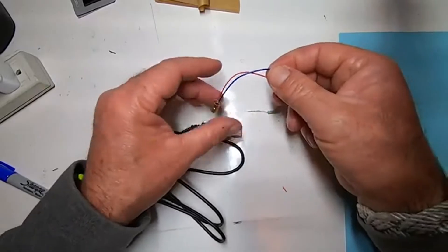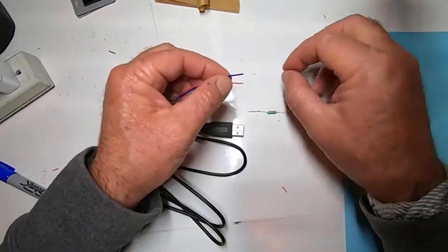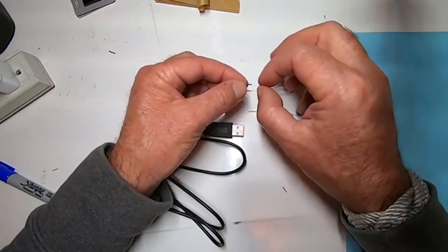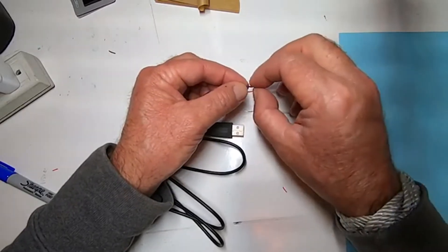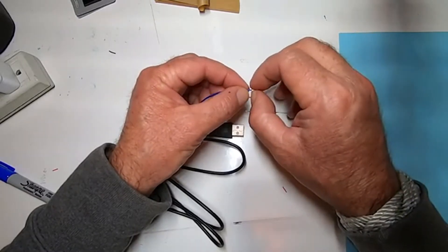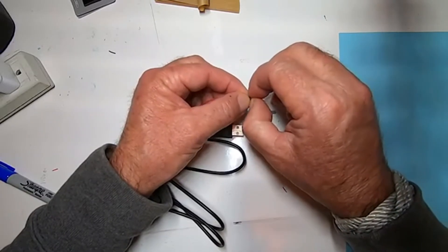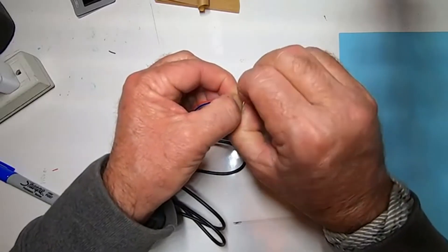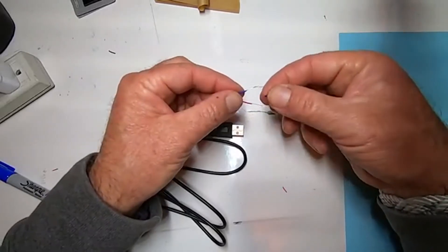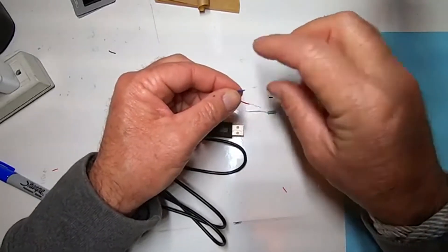The first thing we need to do is expose some of the laser wire. The insulation goes almost all the way to the end. We need about half an inch of bare wire. If you have fingernails, you can pinch the wire and pull, and it'll pull off the insulation and leave the wire if you do it correctly.